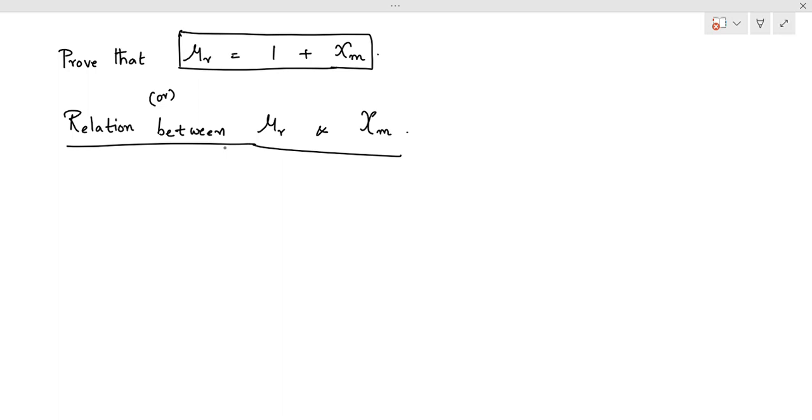Derive the relation between the relative permeability mu R and magnetic susceptibility chi M. Or the question can also be asked as, prove that mu R is equal to 1 plus chi M.